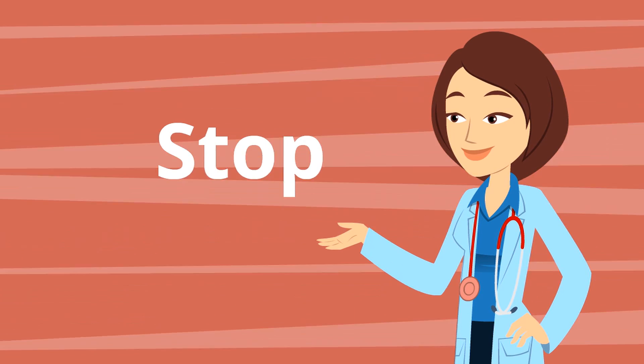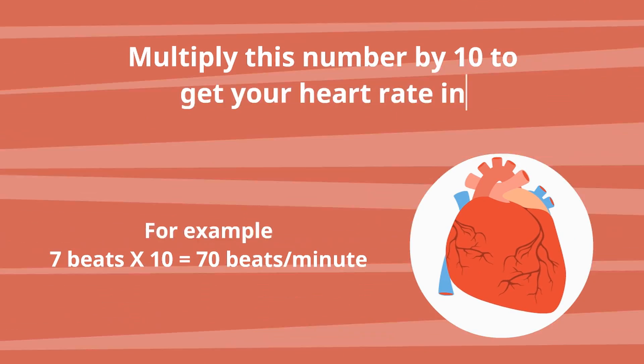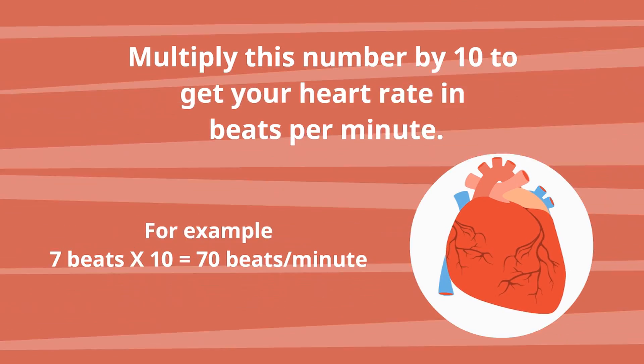Stop! Multiply this number by 10 to get your heart rate in beats per minute. For example, 7 beats times 10 equals 70 beats per minute.